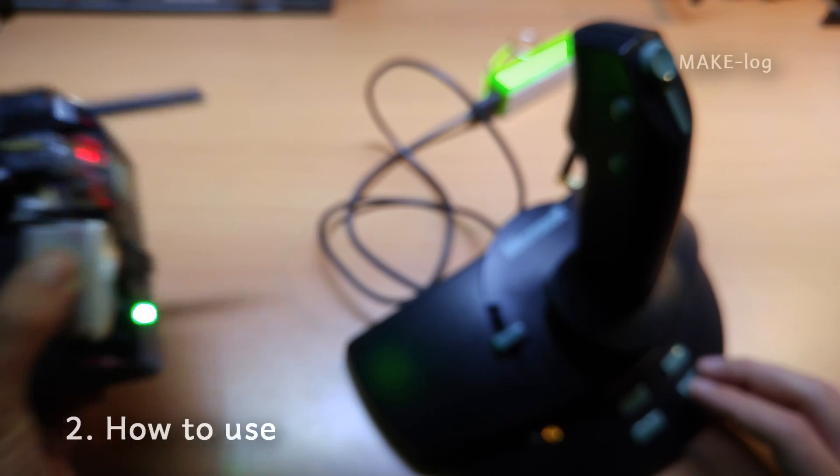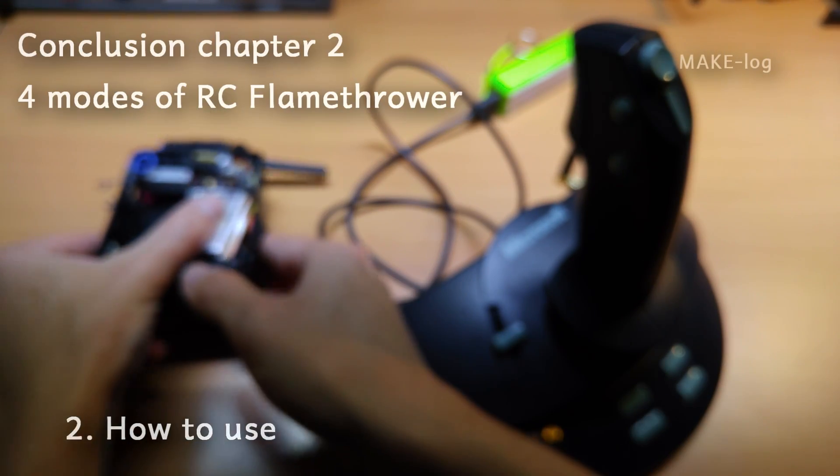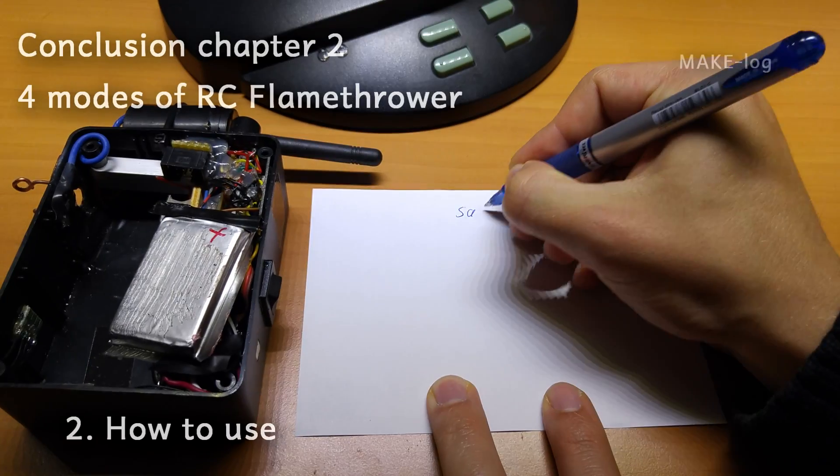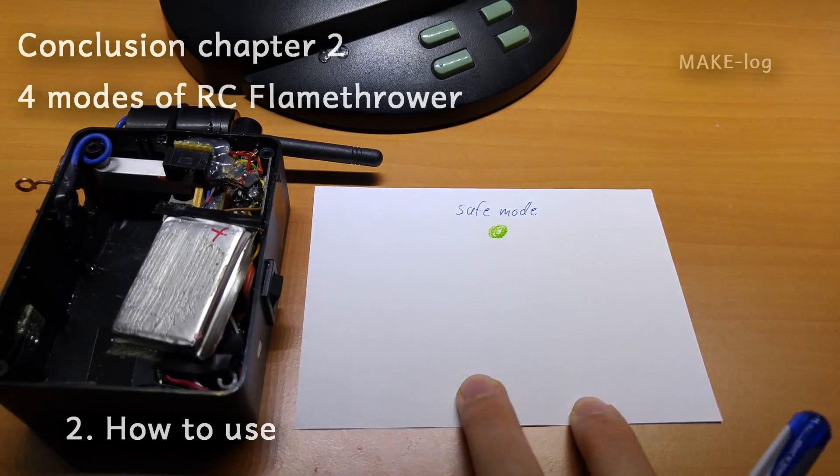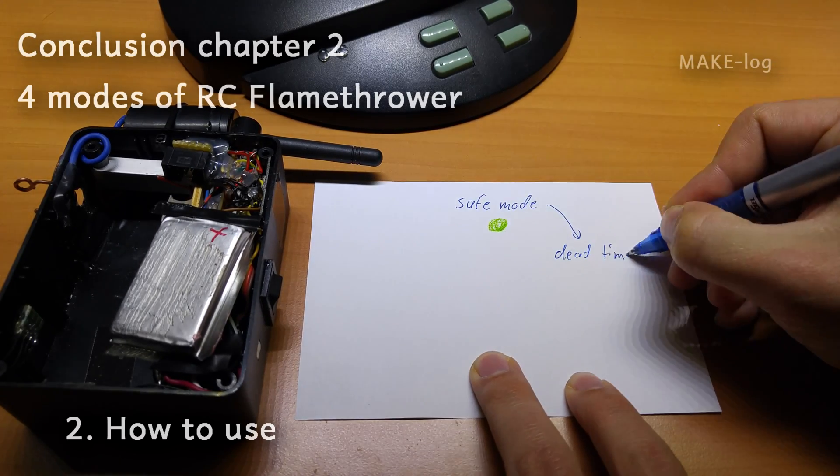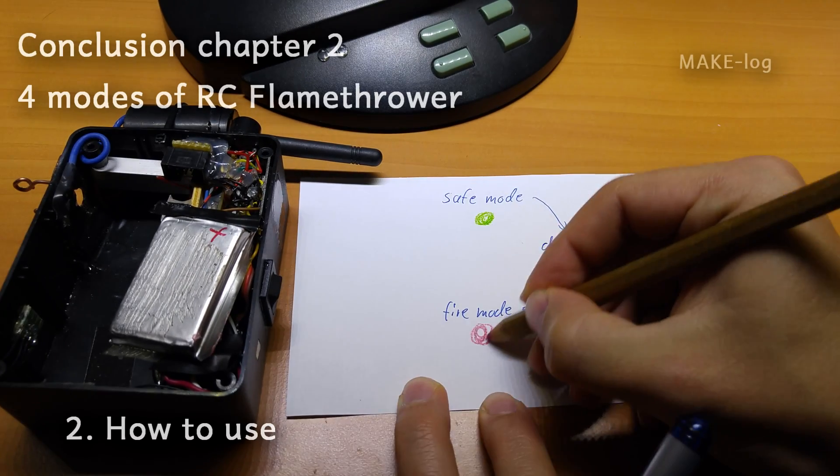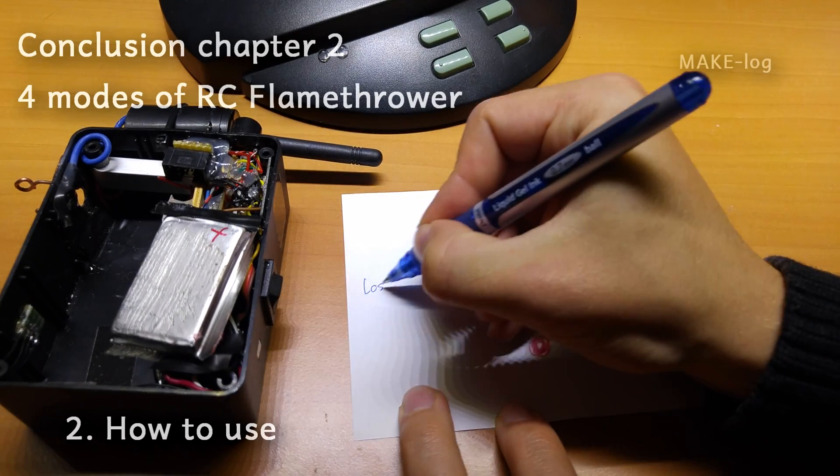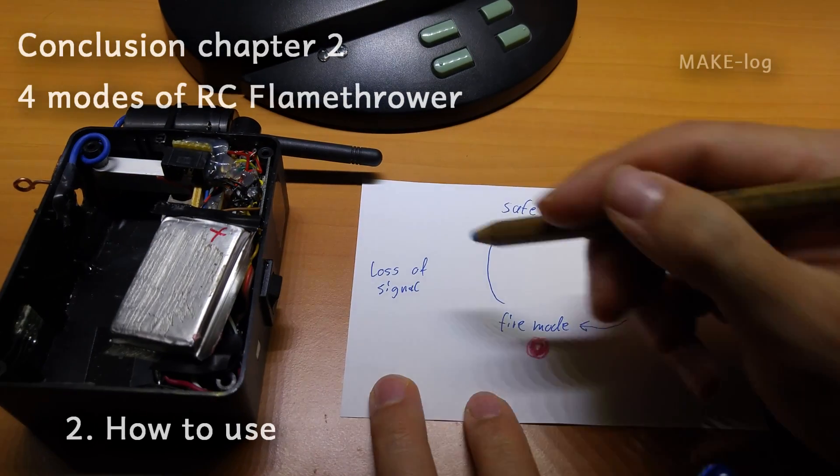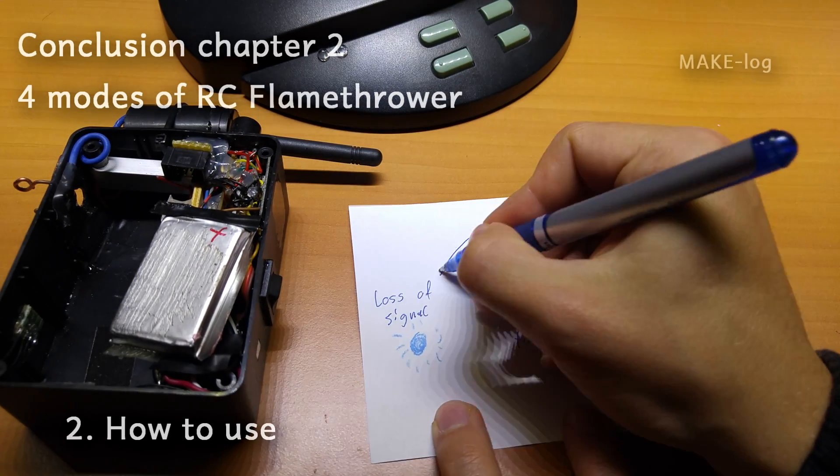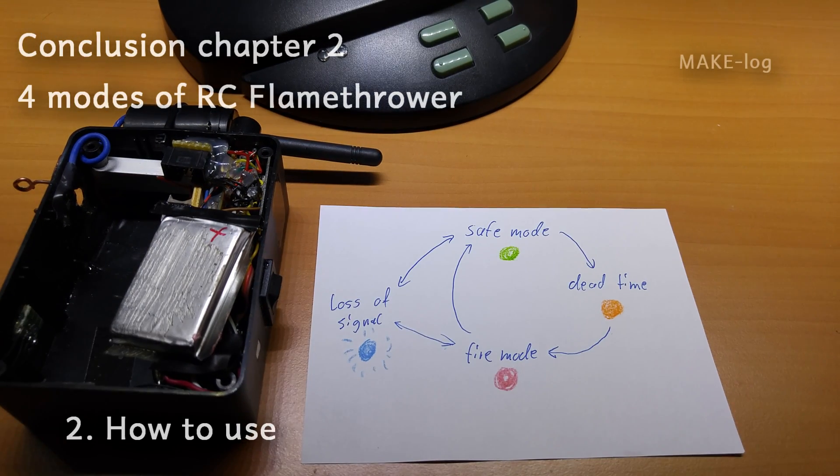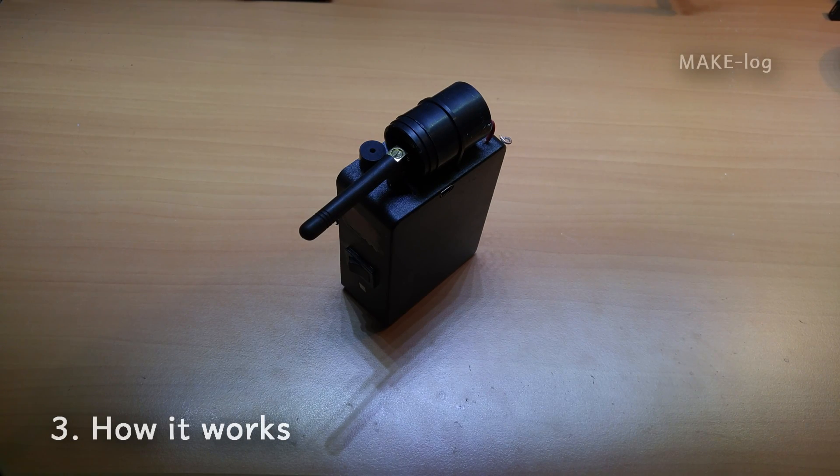To conclude this chapter, we revise the four modes of the flamethrower. The first mode is the safe mode, with the LEDs lit up in green. The second mode is the dead time for security, when the LEDs are lit up in orange. The third mode is the fire mode, with the LEDs lit up in red. And the last mode is the loss of signal mode, when the LEDs are flashing in blue. You have now made it to chapter 3.